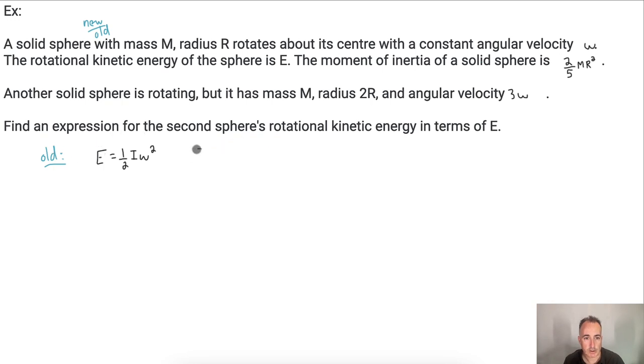There's my old equation. Now, let's actually go a little step further and open up the I. So let's see what happens here. So I, remember, in this case here, the I is 2 fifths M times R squared. All that is still times omega squared. Notice I can have my 2s cancel out. So then I end up with my equation that old is just going to be E equals MR squared omega squared divided by 5. That's it. That's my equation for old.